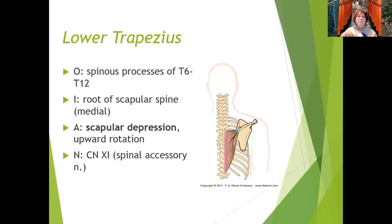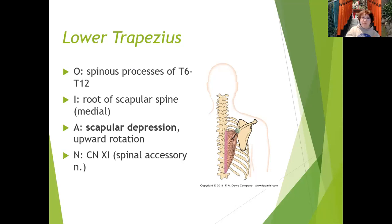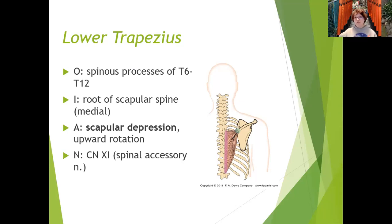The lower trapezius does scapular depression. You can see its line of pull going almost vertically down from the root of the scapula — the insertion — towards the spinous processes. Its insertion is the root of the scapular spine, that medial end. It is also part of the force couple for upward rotation. It takes the spinal accessory nerve, cranial nerve 11, just like the upper trapezius.